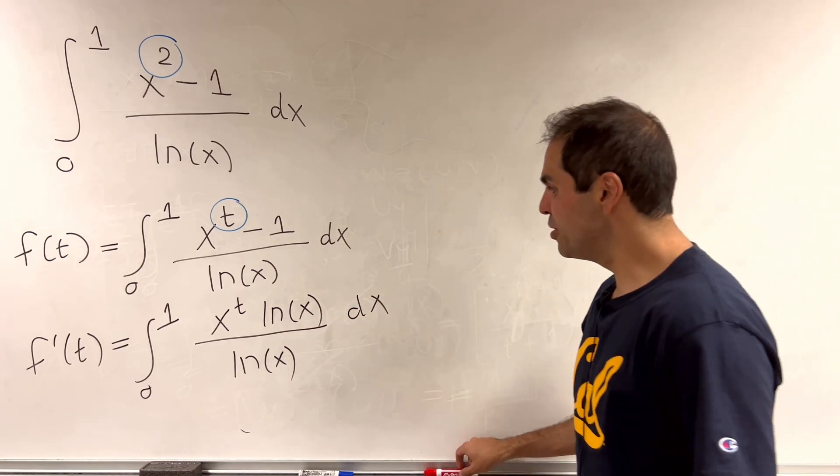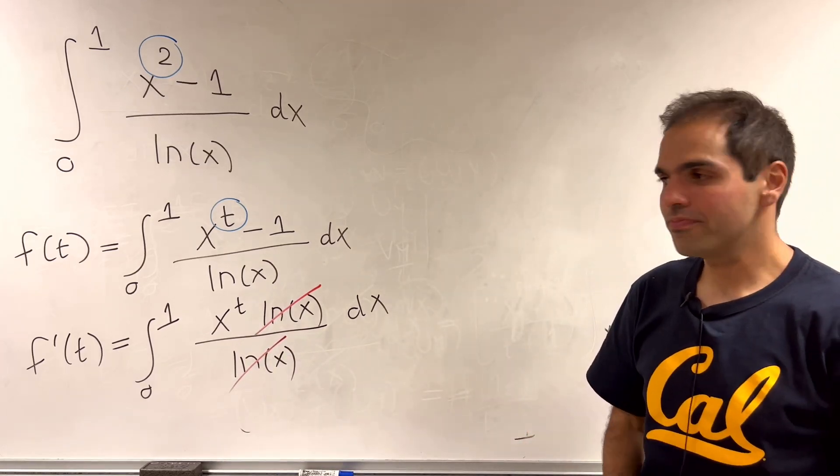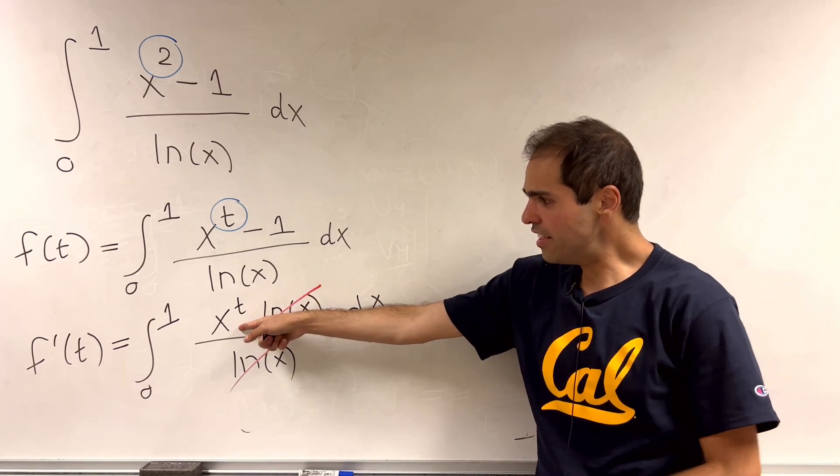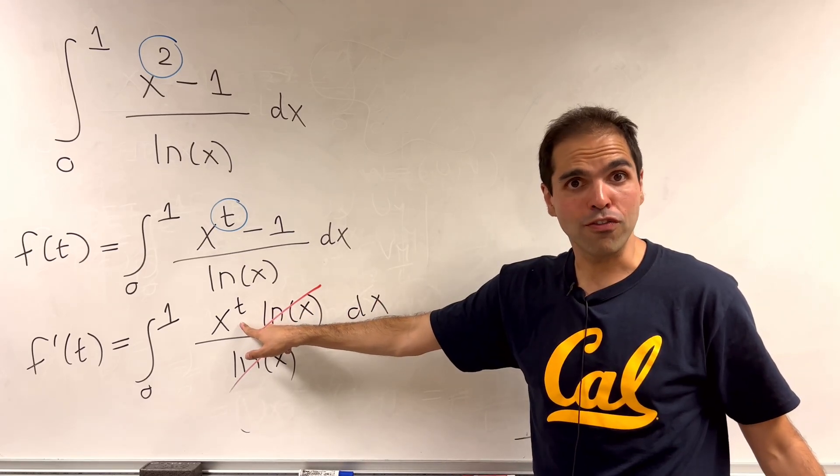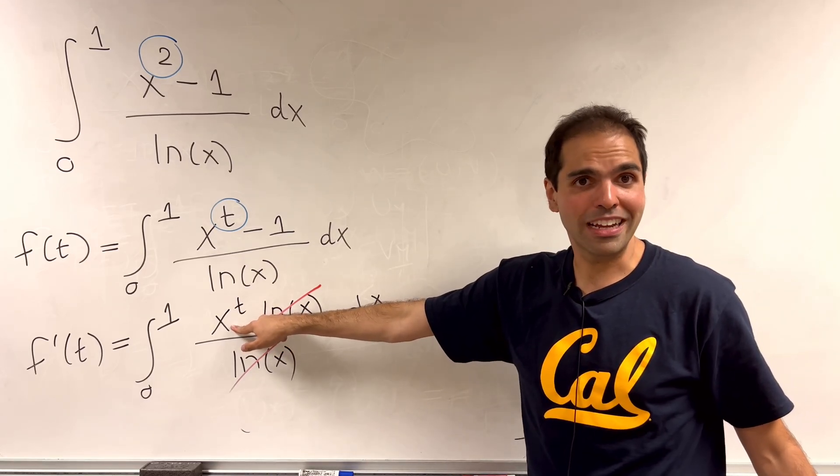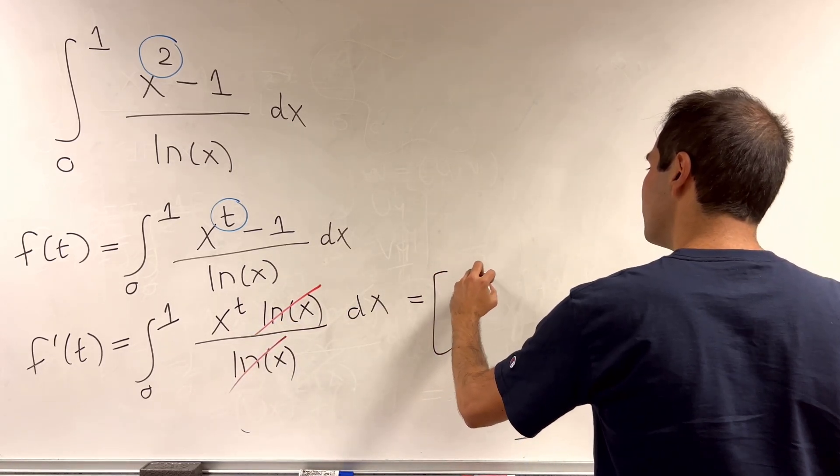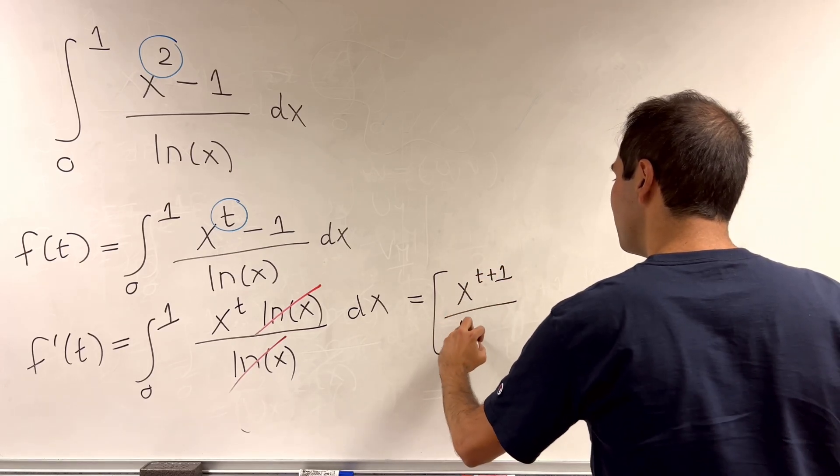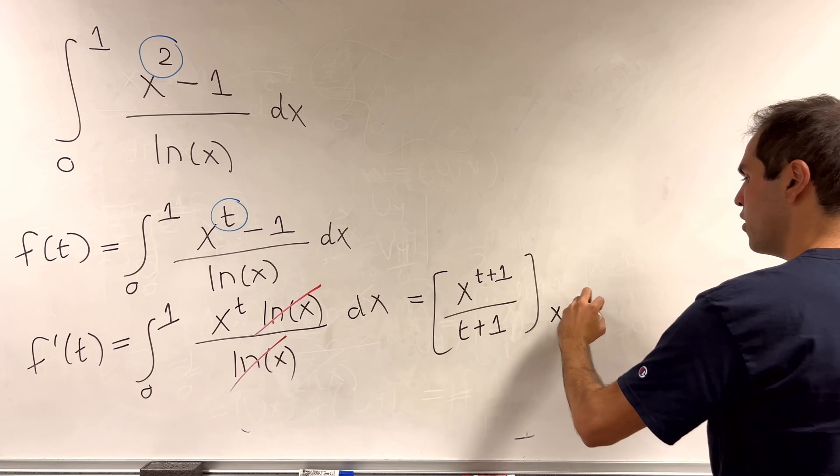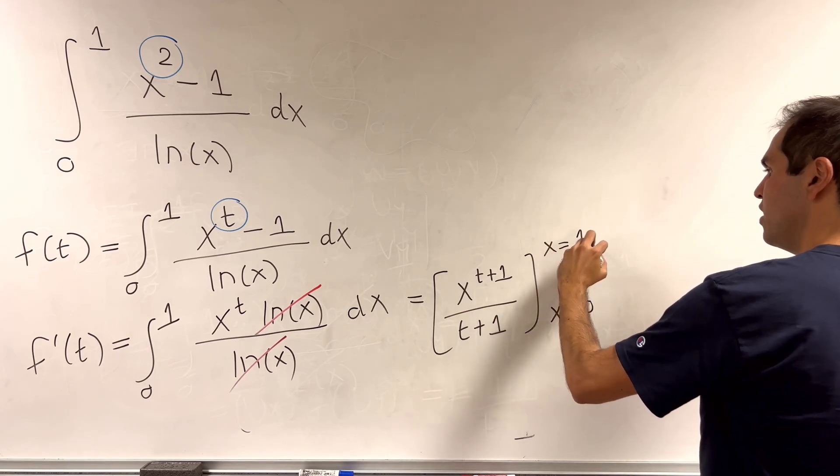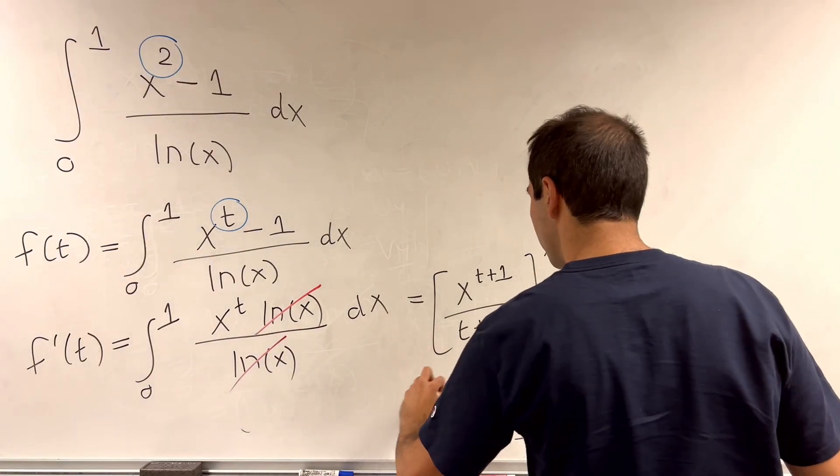And now notice the beautiful thing. The ln of x, they just cancel out. And so in the end, all you have to do is to integrate this power function with respect to x. And what you end up getting is x to the t plus 1 over t plus 1. And that's from x equals 0 to x equals 1, which in the end gives you 1 over t plus 1.